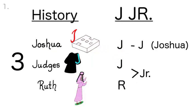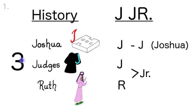Now let's say that three times: 3 J Jr., Joshua, Judges, Ruth. 3 J Jr., Joshua, Judges, Ruth. 3 J Jr., Joshua, Judges, Ruth.